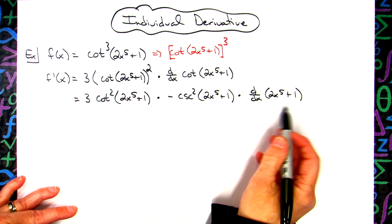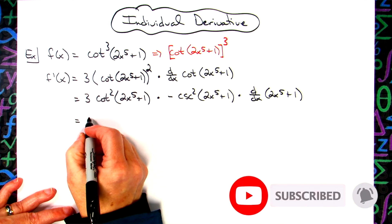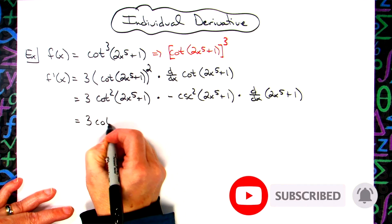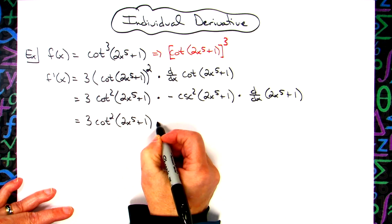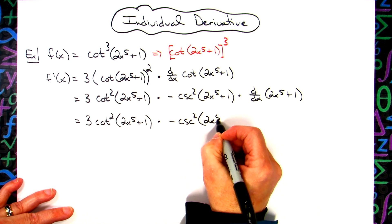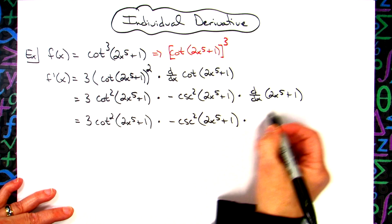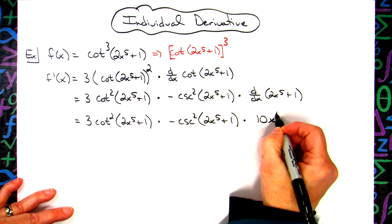Last line there will then be taking the derivative of that last portion. So everything here will stay the same, 3 cotangent squared of the 2x to the fifth plus one. Go ahead and leave the negative cosecant squared of the 2x to the fifth plus one. And then taking the derivative there, pulling that five down in front, that'll give me a 10x to the fourth.